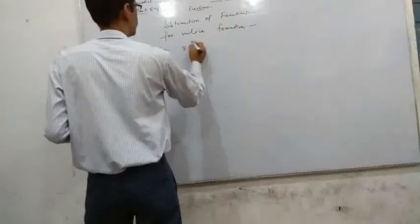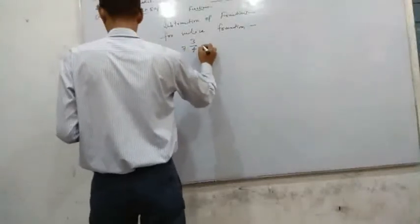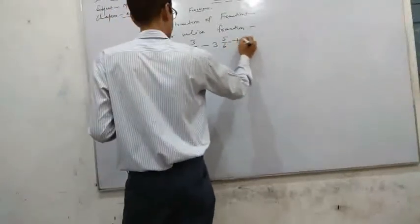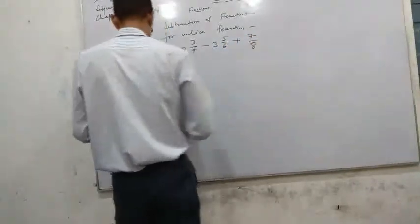Next question: 7 3 by 4 minus 3 5 by 6 plus 7 by 8.